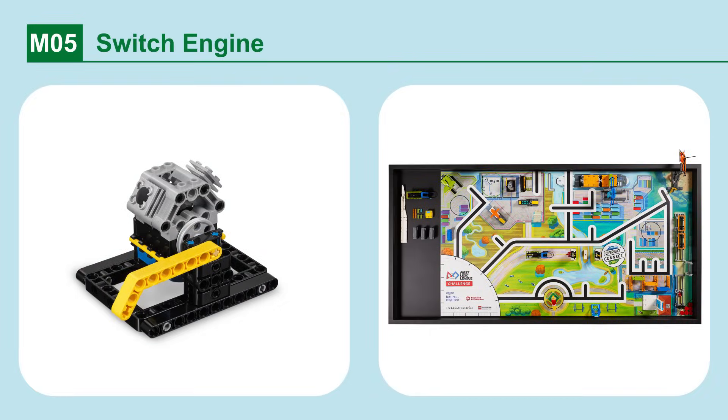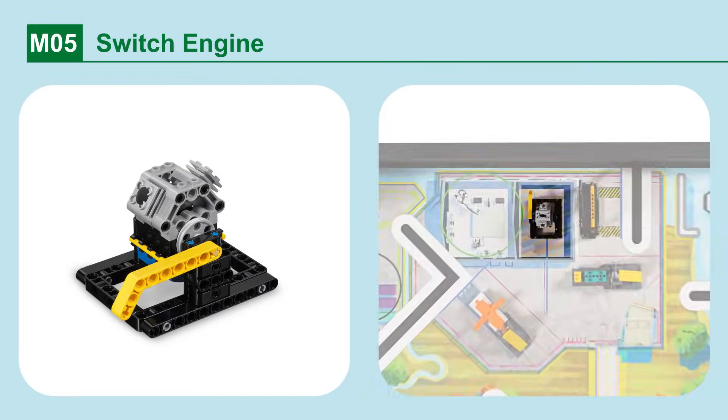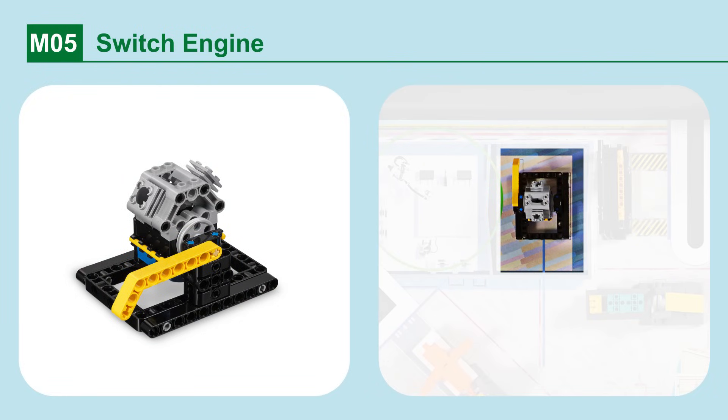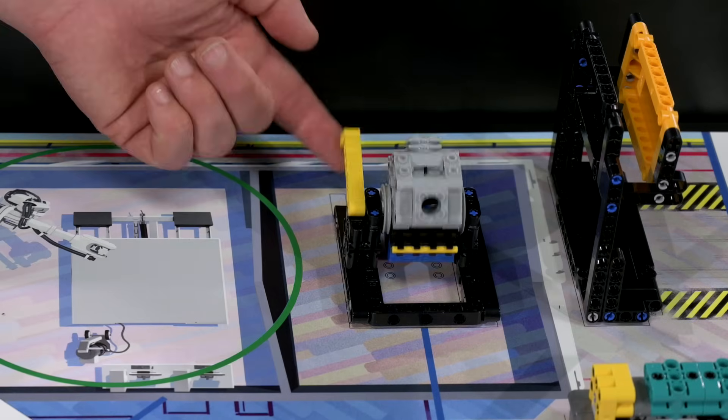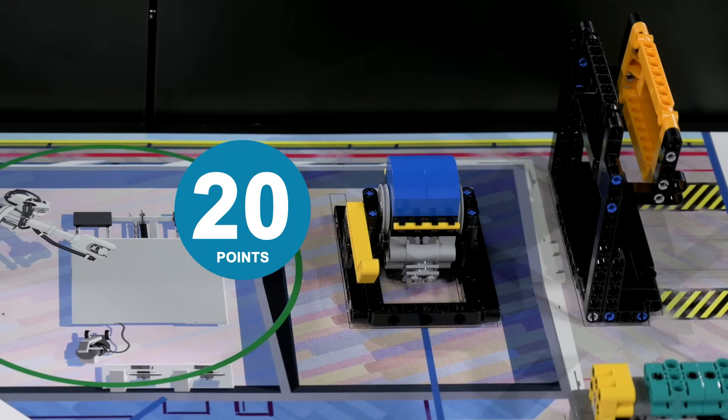Mission 5. Switch Engine. Switch your engine from diesel to electric. The engine is switched so that the yellow bar is resting all the way down to the south.